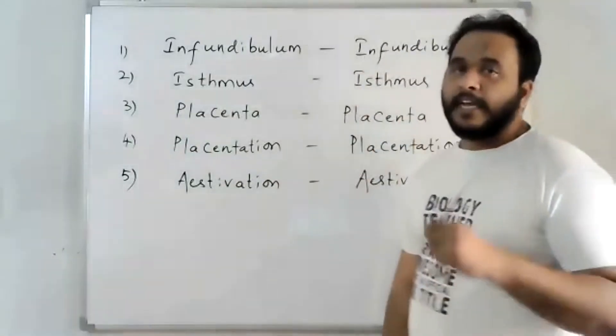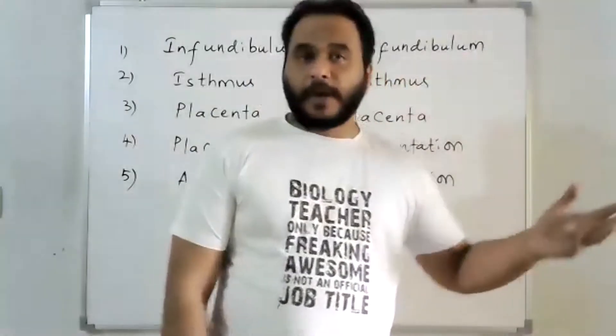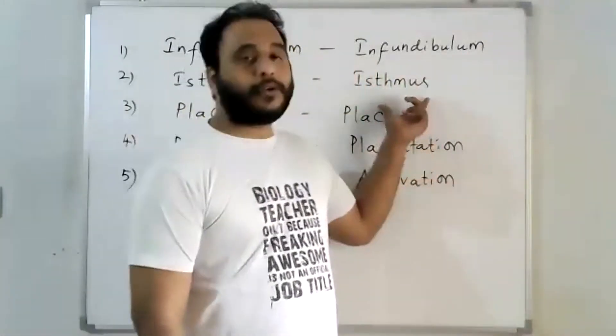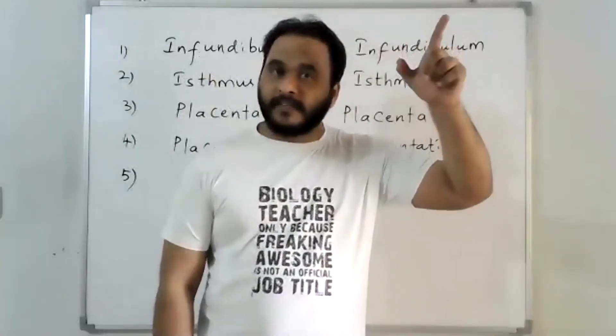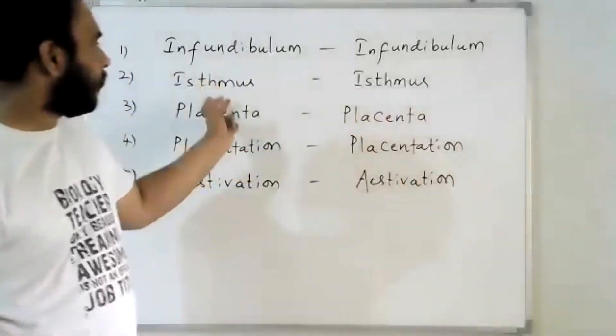Coming to this isthmus, it's the second part or the third part of the fallopian tube of the female reproductive system: infundibulum, ampulla, isthmus, which further opens into the uterus. So that is the difference.